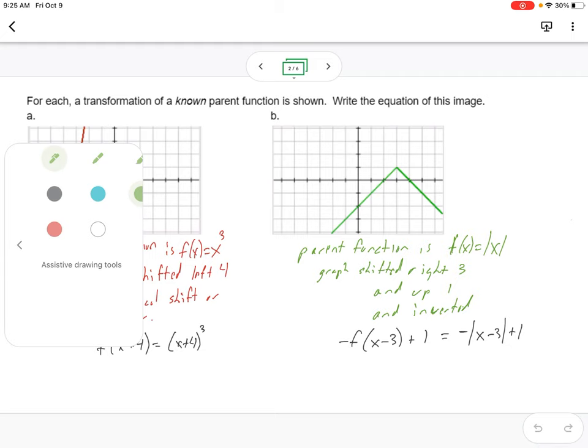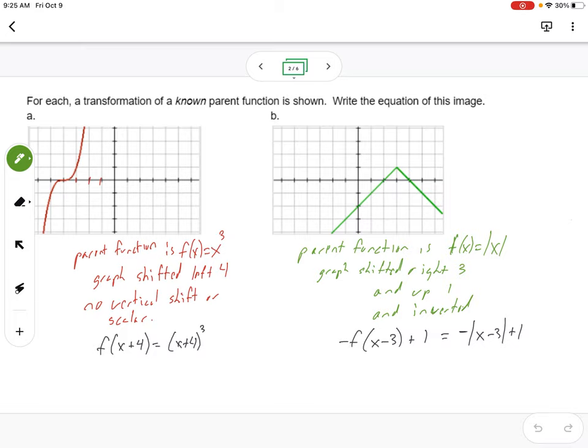But what I wanted to do was focus on part B and look at this and say, the shape is pointing down, but it's not a parabola.